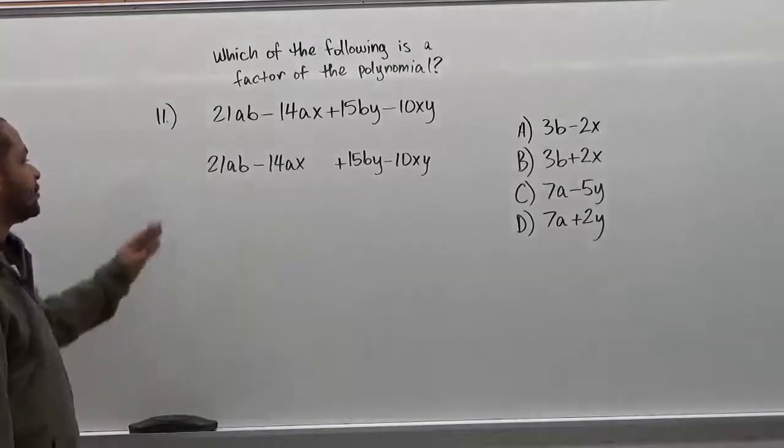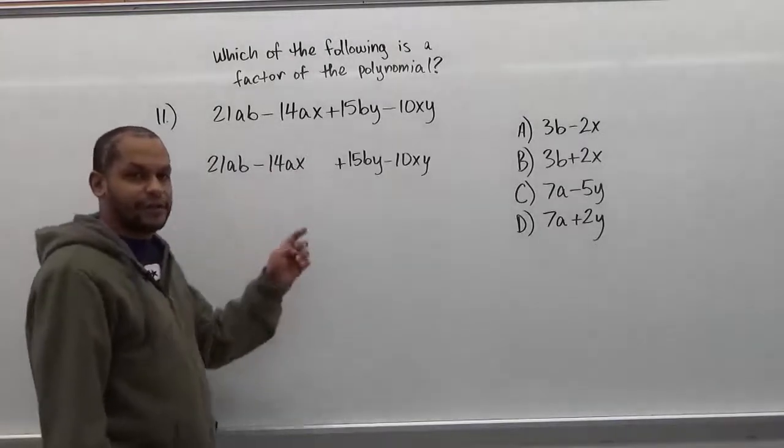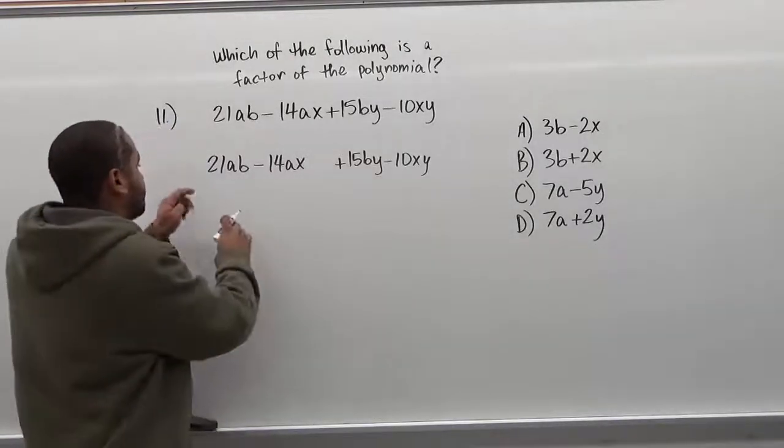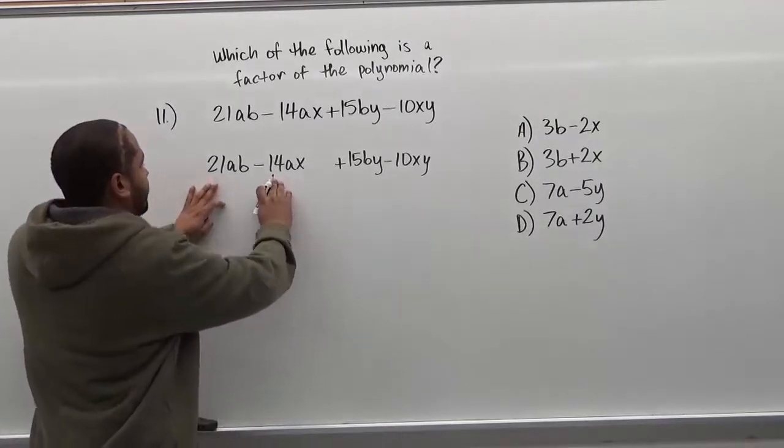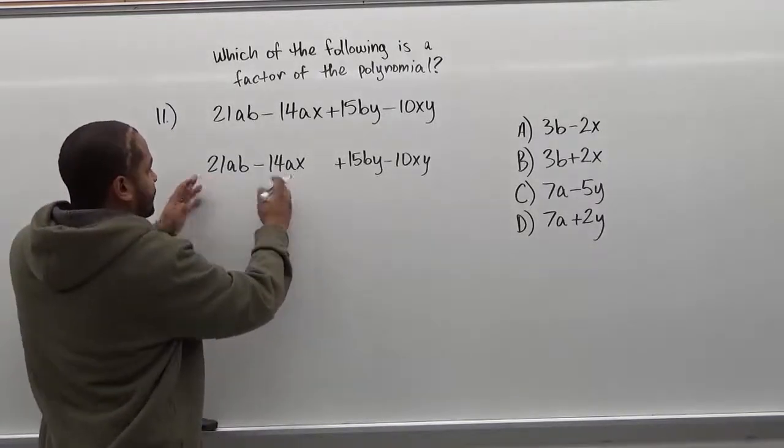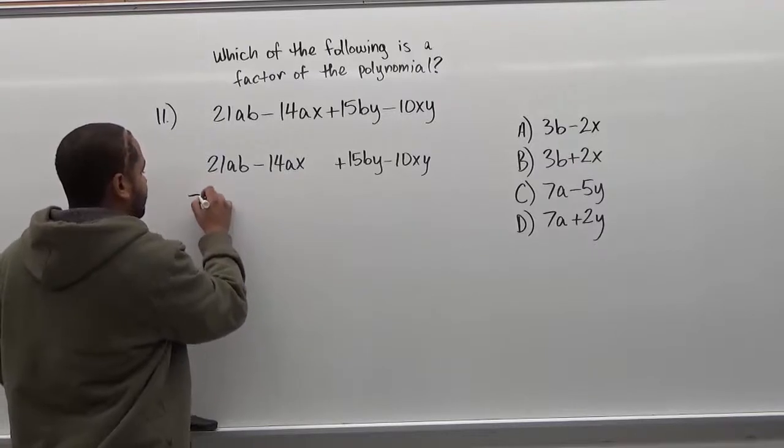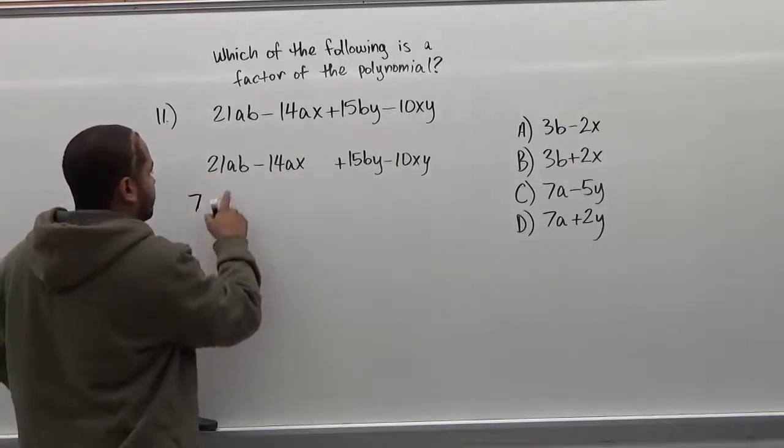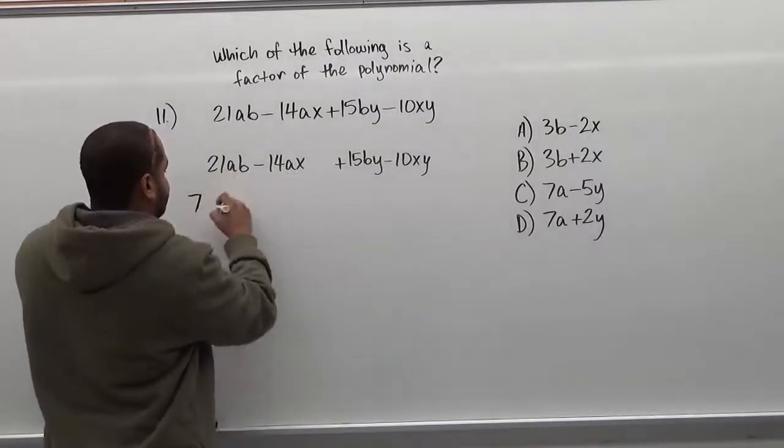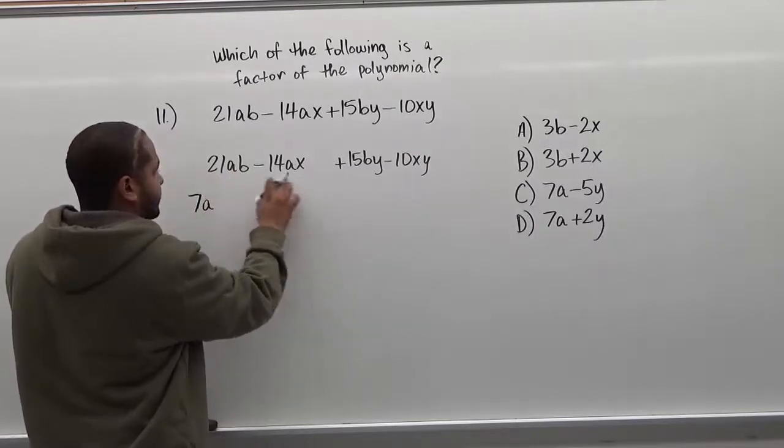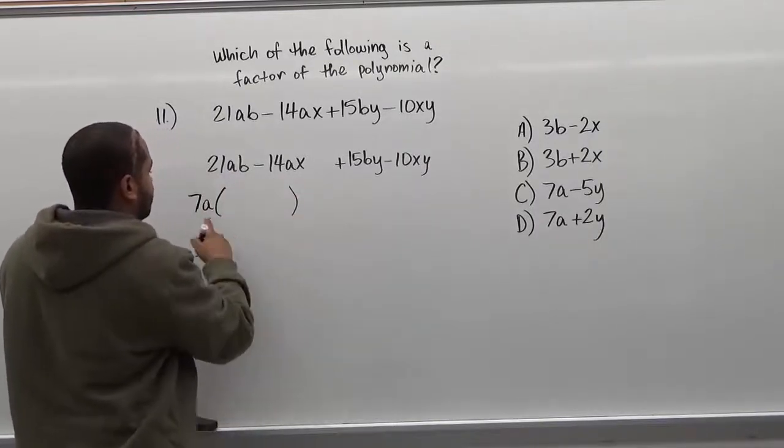Now, the first thing we want to do when we're factoring this is look for the greatest common factor of the numbers, right? So we have a 21 here and we have a 14 here. The common multiple that they have is 7, so we're going to factor out a 7, and also we see that they both have an a. So the greatest common factor between them is 7a, and in the parentheses we put whatever is left over.